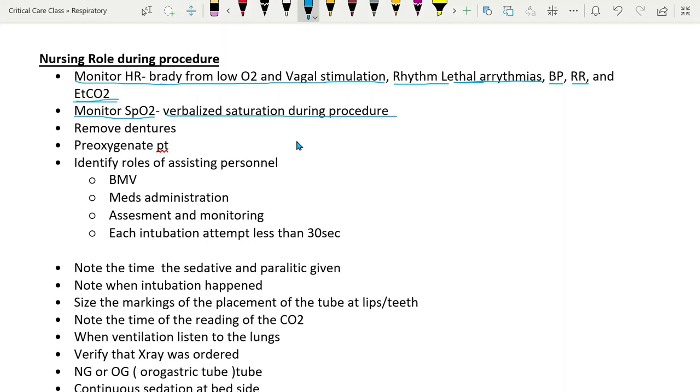The nurse should monitor O2 saturation and verbalized desaturation during the procedure. Patient is at 90%, patient is below 85%, 84%, 83%, 82% and so on due to providers focus on procedure not on the monitor. Stopping, reoxygenating and reventilating patient may be necessary to reattempt the intubation. Nurse should remove the dentures to assist with intubation. Nurse should pre-oxygenate the patient for 3 to 5 minutes with nasal cannula and non-rebreather or other devices. Nurse should identify roles of other nurses to ventilate the patient with BVM. Sometimes administer medication, assess and monitor patient and note that each intubation is less than 30 seconds.